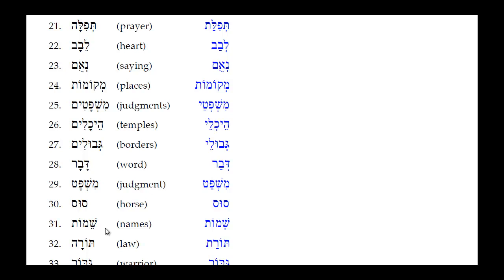Number twenty-nine: Shemot — a feminine plural absolute for names. In construct, the Oat does not change — it remains the same. The only reduction is the Tsere under the Shin (open unaccented syllable) reduces to a simple Sheva. Result: Shmot.